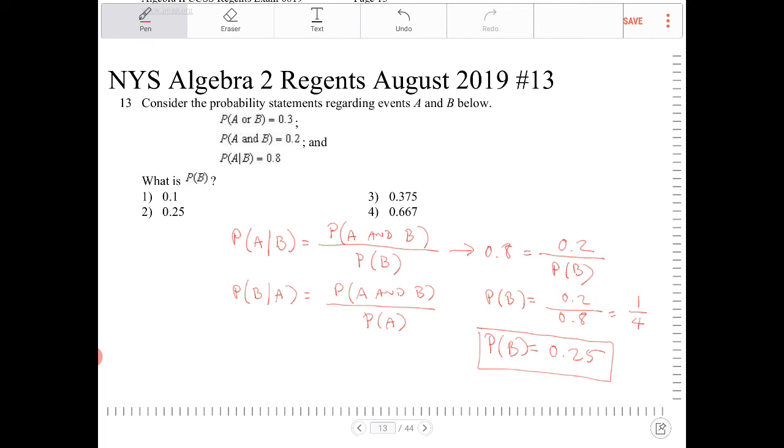In this question, they actually gave us additional information that we really don't need, but that's okay because we know what to do here. Option 2 is the correct answer.